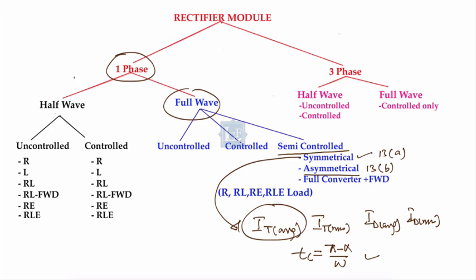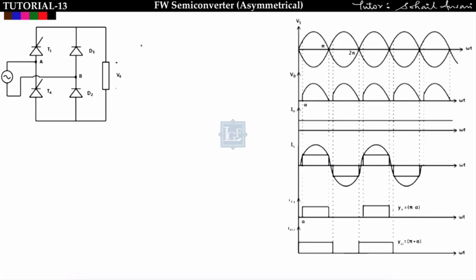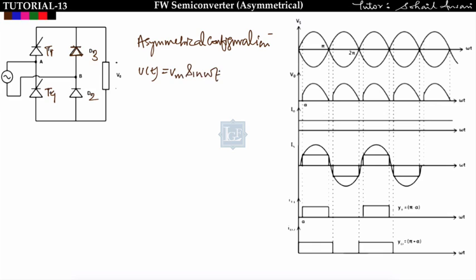Now in this lecture we will cover asymmetrical configuration. In asymmetrical configuration, both thyristors T1 and T4 are connected in one leg, while diodes D3 and D2 are connected in another leg. The supply voltage is given as Vs equal to Vm sine(omega t), which is also equal to Vab. Therefore Vba equals minus Vm sine(omega t).